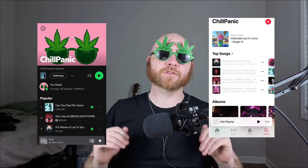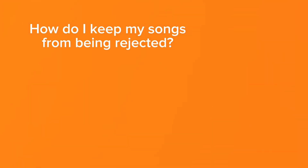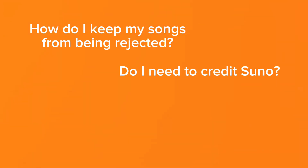Word has it that you made some AI music with Suno that you want to put on places like Spotify, Apple Music, YouTube Music, and Amazon. And maybe you've even watched some other tutorials that cover this, but you still have questions like, how do I keep my songs from being rejected?